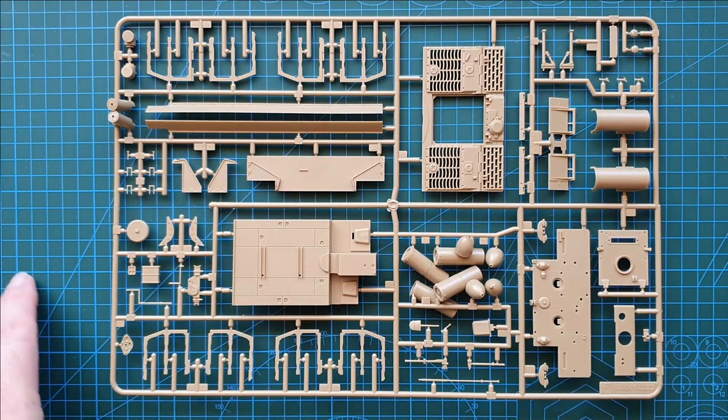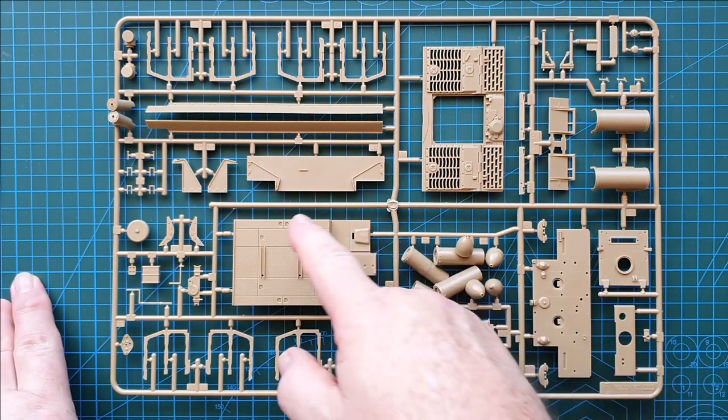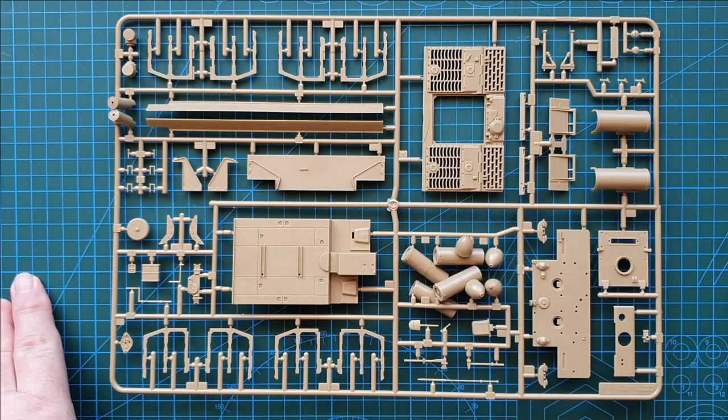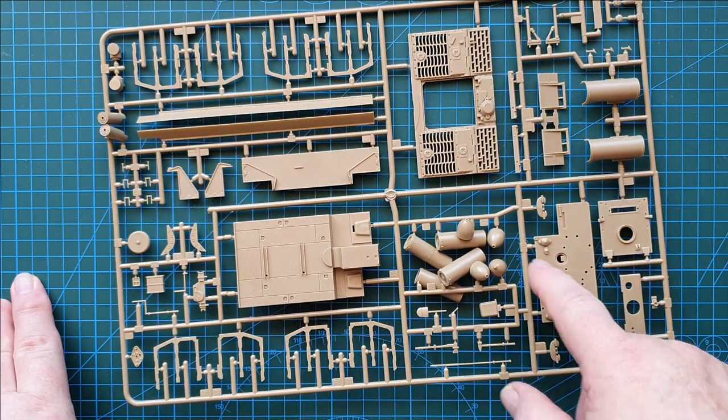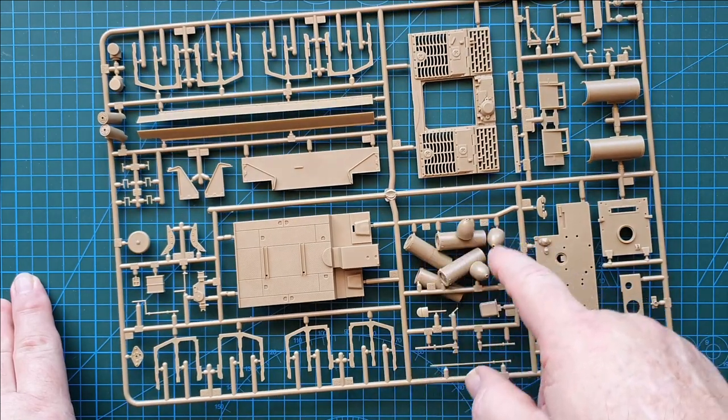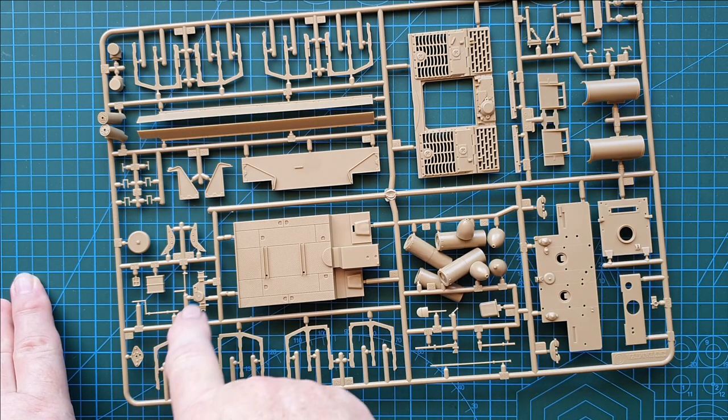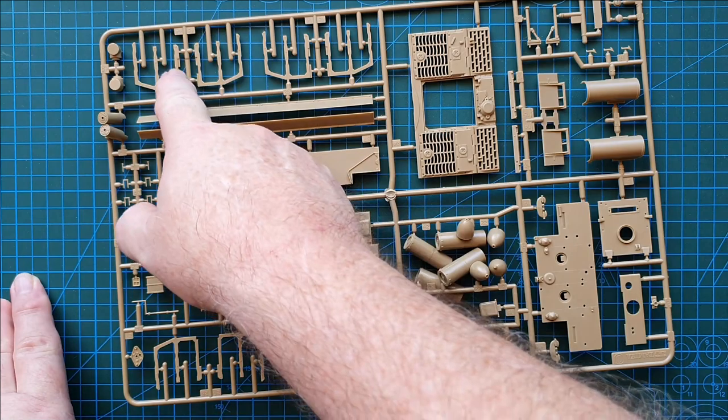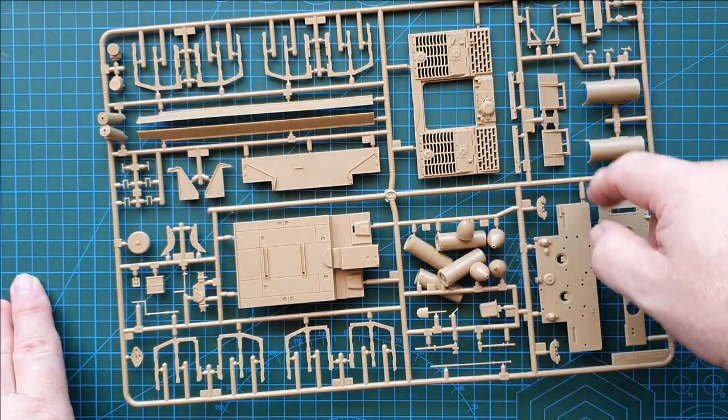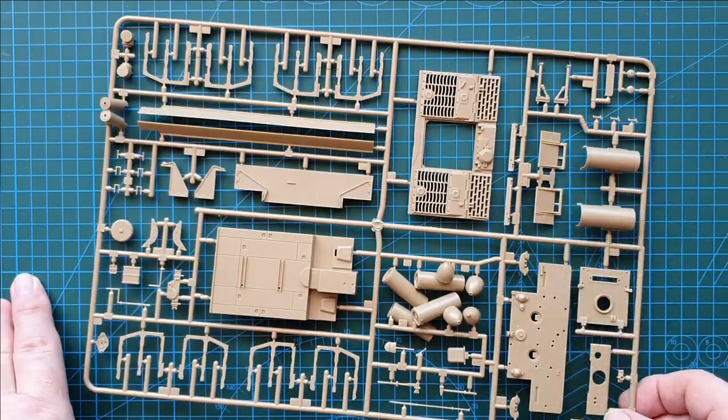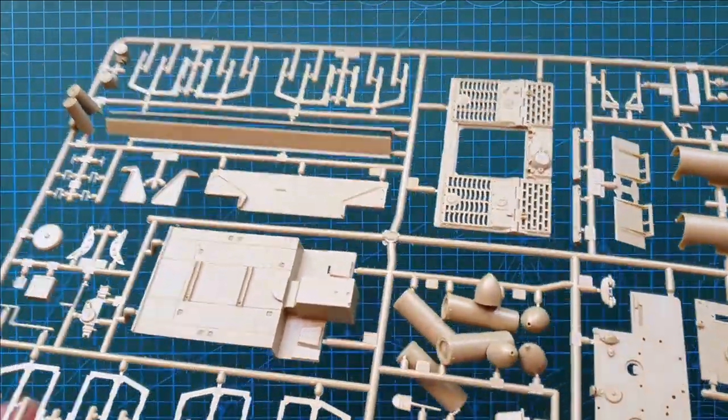The next one is this one - interior floor, engine deck, rear of the tank. These are your rocket shells, ammo racks, jack, fittings like rear mudguards. Let's have a look.